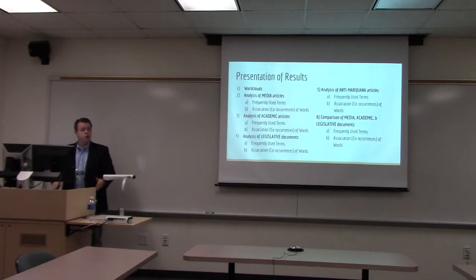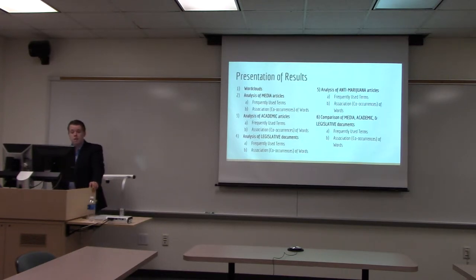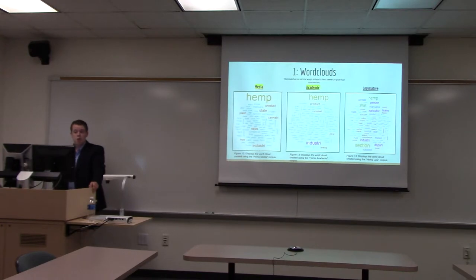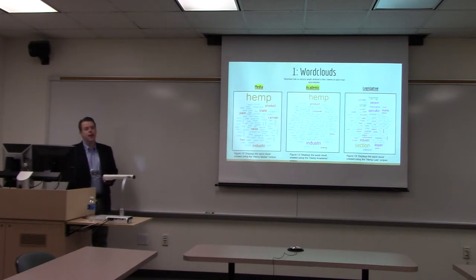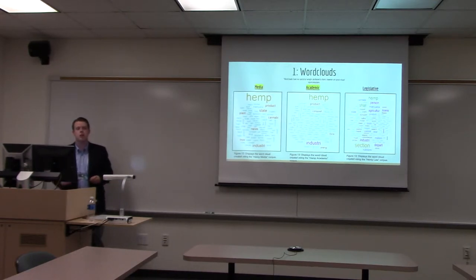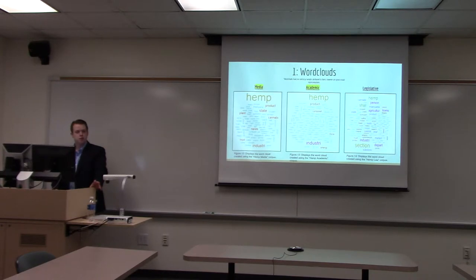Here is a brief outline of how I'm going to present the results. The first is our word clouds for the first three corpuses — an analysis of the media articles, academic articles, and legislative articles — plus anti-marijuana articles as a contrast, and then a comparison of all these documents. As you can see, the hemp media and academic corpus are actually quite similar. But the academic corpus is more concise on what they're talking about. The legislative corpus has a lot of administrative text — it's more focused on controlling and regulating.